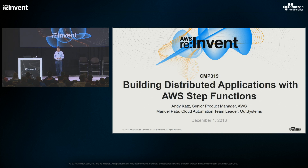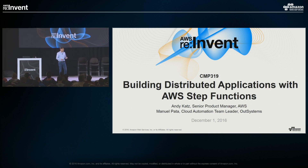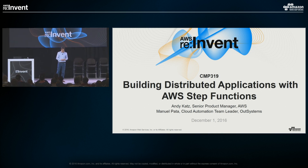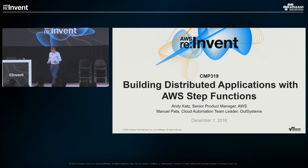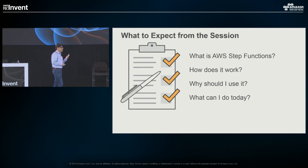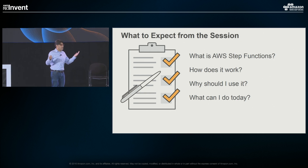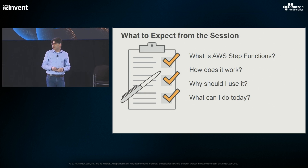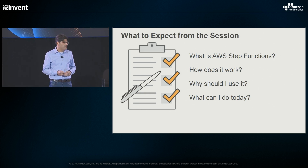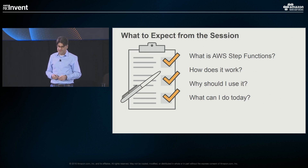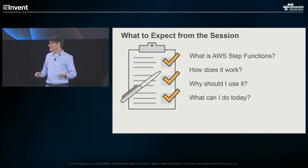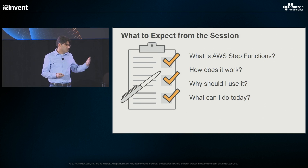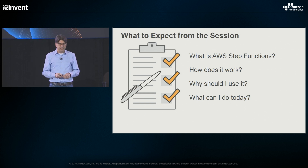Some of you may have seen the serverless talk earlier this afternoon — this is going to be at a little different level, and we're going to talk about different usage patterns. The talk will cover four topics: what is AWS Step Functions, how does it work and what does it look like in use, why use it and what situations might it come in handy, and what's available today.